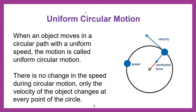Uniform circular motion. When an object moves in a circular path with a uniform speed, the motion is called uniform circular motion. There is no change in speed during circular motion; only the velocity of the object changes at every point of the circle. As the object is moving with constant speed, it has constant kinetic energy during this motion.